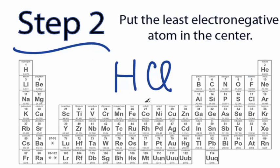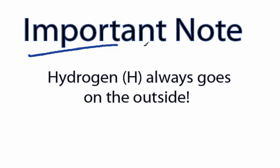Some Lewis structures, like HCl, only have two atoms. In that case, you don't have to worry about it because there's no center. An important note, hydrogen always goes on the outside of Lewis structures. Always. Seriously.